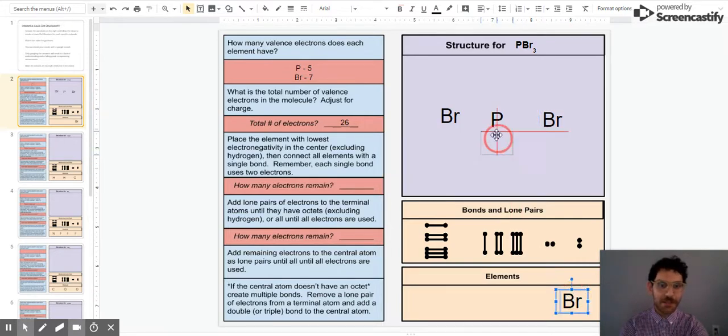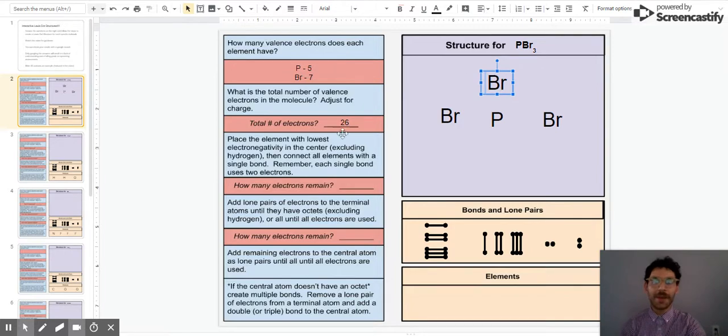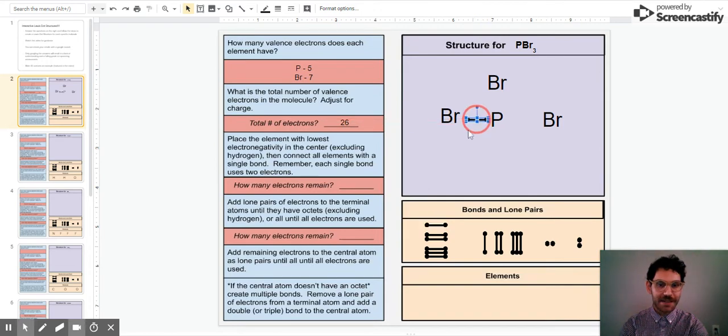It doesn't matter where I put these bromines. I'll put this one up top. I want to connect all of these terminal elements to the central atom with a single bond. So I'll click and drag one of these and put it in between there. I'll click and drag this guy and put it in between there. And I'll click and drag this guy and put it in between there.